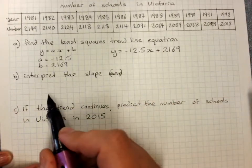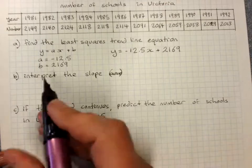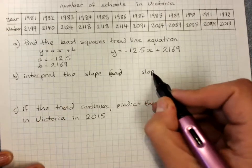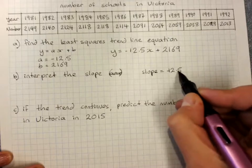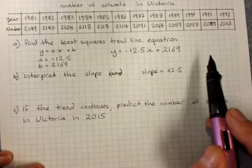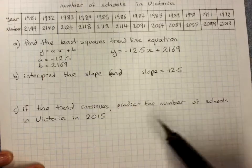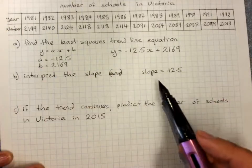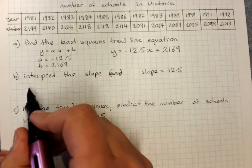To interpret the slope, since the slope was negative 12.5, that means that in this time period, on average, the number of schools decreased by about 12.5 schools per year.